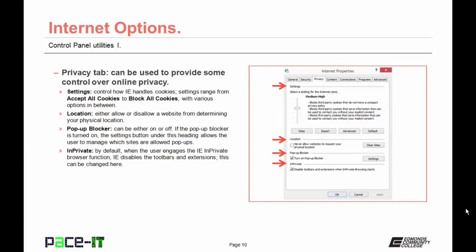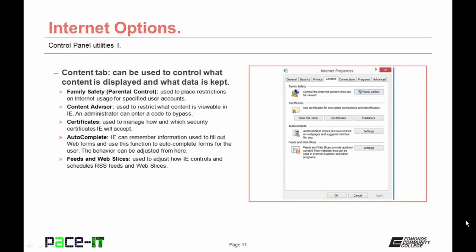The Content tab controls what content is displayed and what data is kept. Family Safety (also known as Parental Controls) places restrictions on Internet usage for specific user accounts. Some versions have Content Advisor to place restrictions on what content is viewable in Internet Explorer — an administrator can enter a code to bypass this setting. The Certificates section manages how and which security certificates IE will accept. Internet Explorer can also remember information used to fill out web forms using the Autocomplete function, and the Feeds and Web Slices section adjusts how IE controls and schedules RSS and Web Slices.